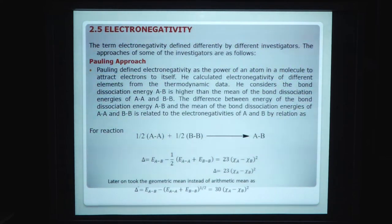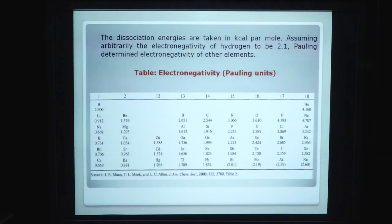Later on, Pauling took the geometric mean instead of arithmetic mean. Delta E equals E-AB minus square root of (E-AA times E-BB) equals 30(chi-A minus chi-B) squared. The dissociation energies are taken in kilocalorie per mole, assuming arbitrarily the electronegativity of hydrogen to be 2.1. Pauling determined electronegativity of other elements.